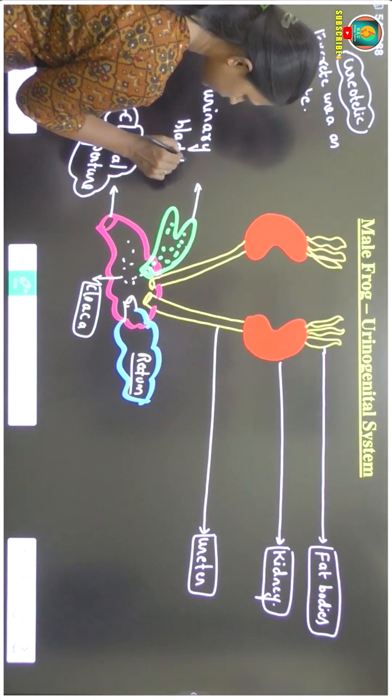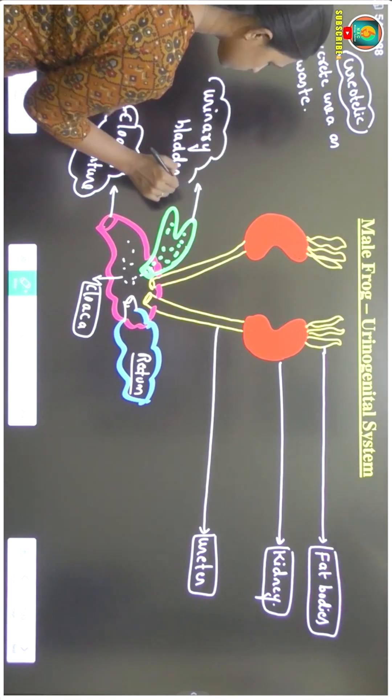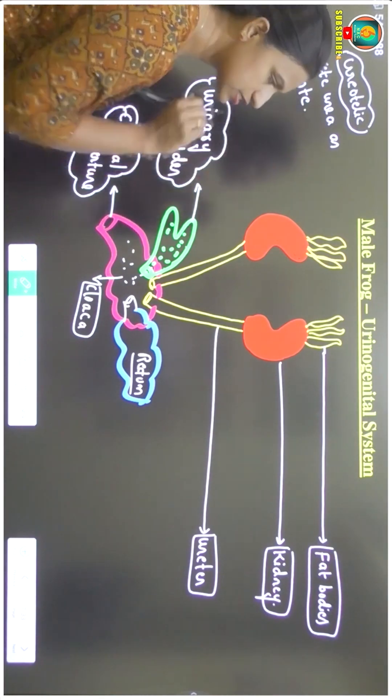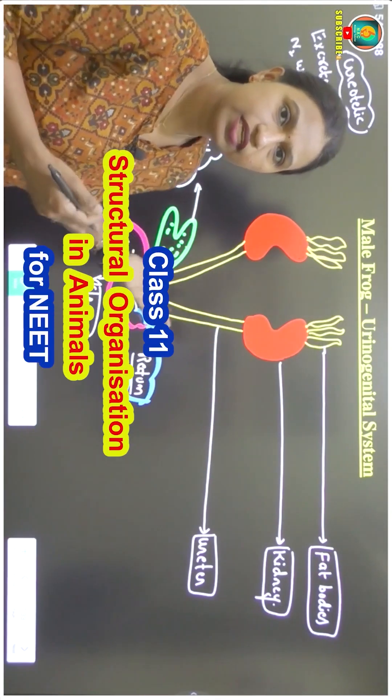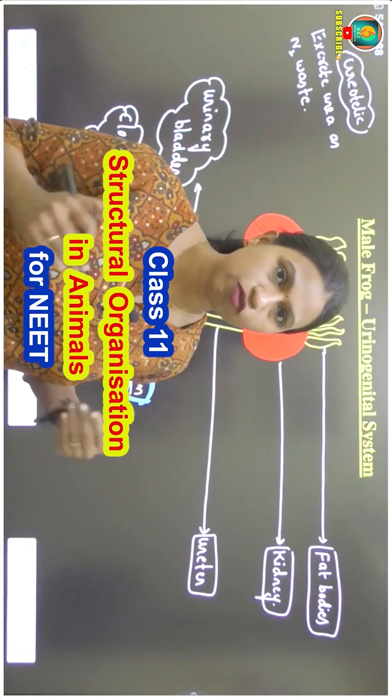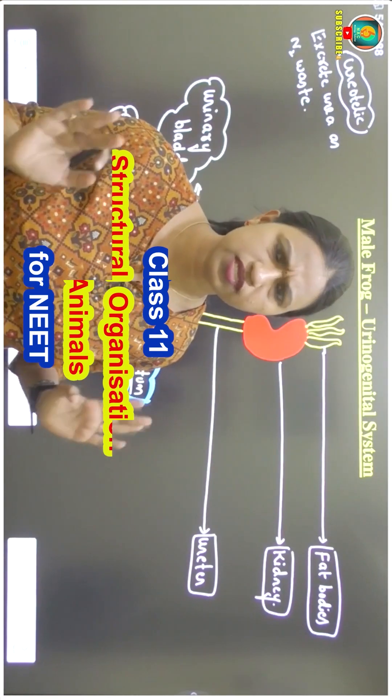Even in our case, urinary bladder is present. Here also urinary bladder is there. In our case, ureter is there. Here also ureter. In our case, a pair of kidneys. Here also a pair of kidneys. Ours is also a reddish brown structure. Here also a reddish brown structure.